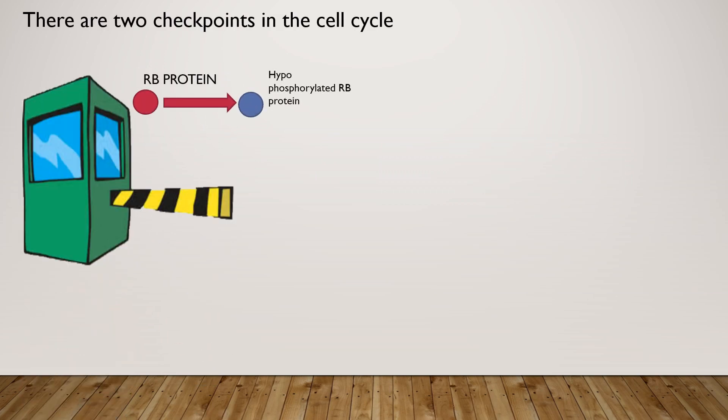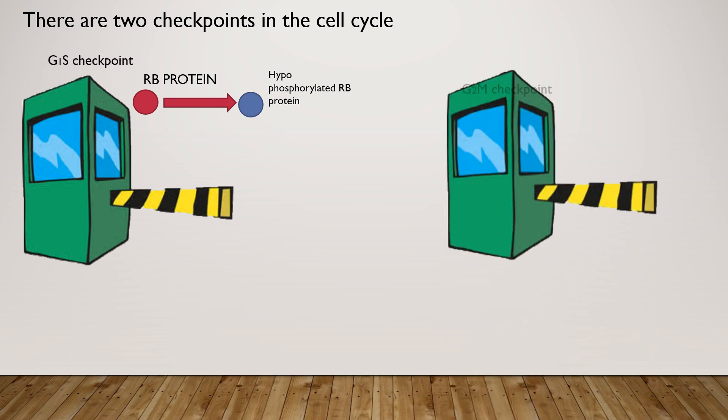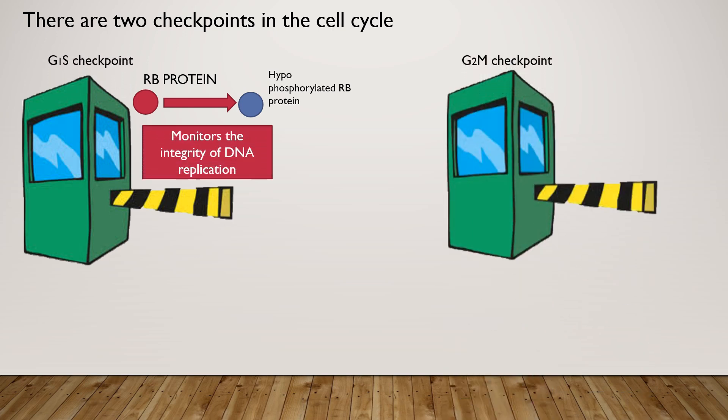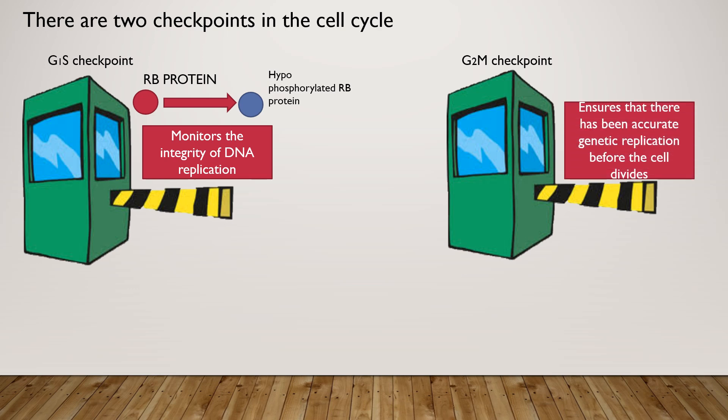The cell cycle has two main checkpoints: the G1/S checkpoint and the G2/M checkpoint. The G1/S checkpoint monitors the integrity of DNA replication, whereas the G2/M checkpoint ensures that there has been accurate genetic replication before the cell actually divides.